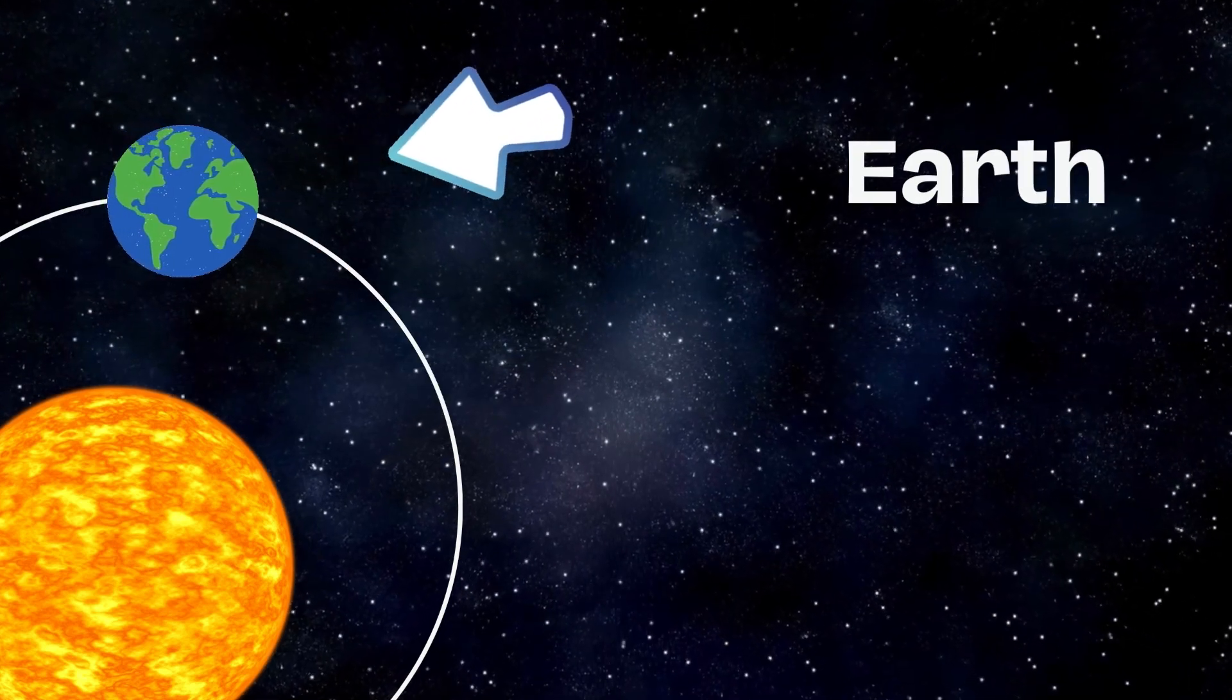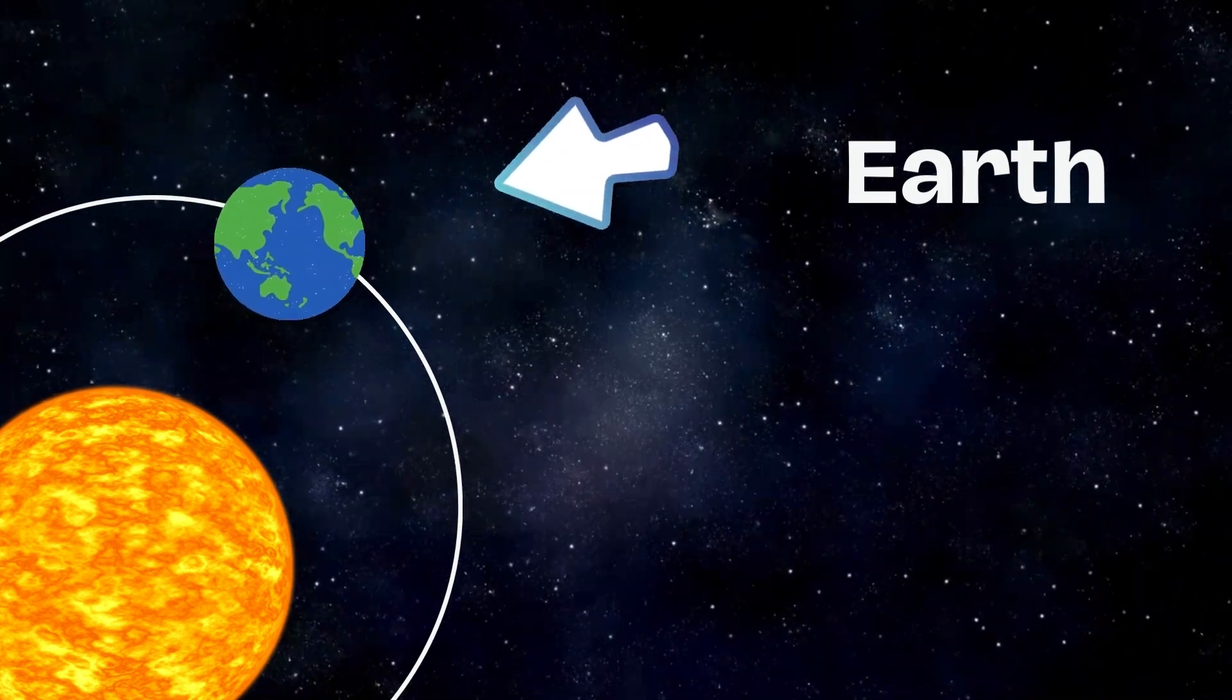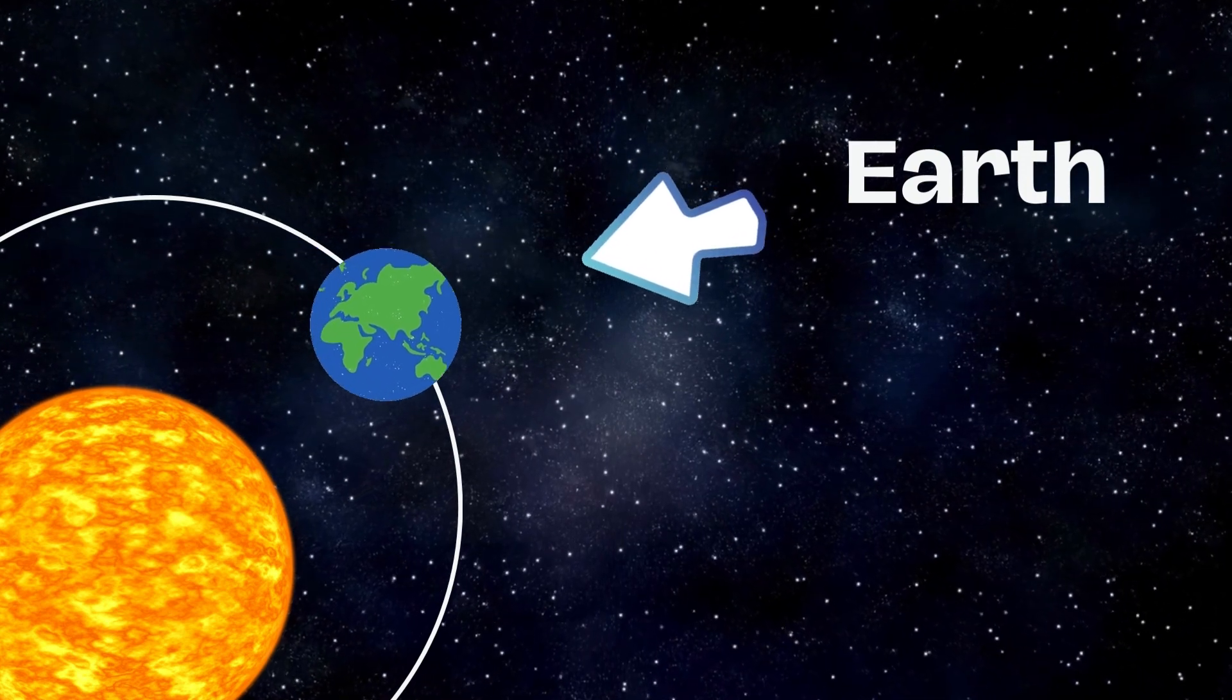Earth, our home, is the only planet we know of with life. It has oceans, mountains, and lots of different kinds of animals and plants.